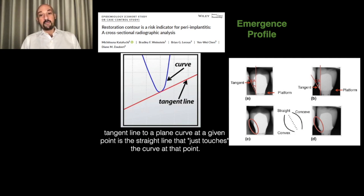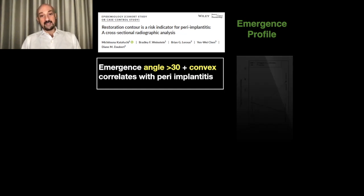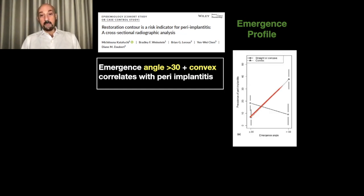For bone level implants, it was found that an emergence angle of more than 30 degrees combined with a convex profile correlates significantly with peri-implantitis. Implants with this wide emergence angle, especially with a convex profile, were much more likely to develop peri-implantitis.